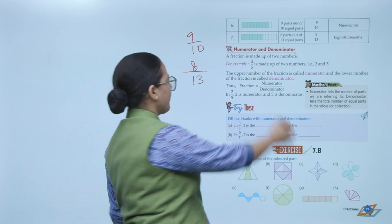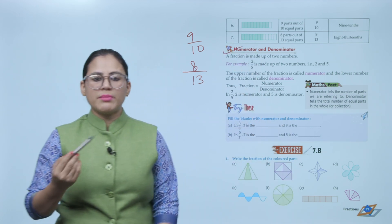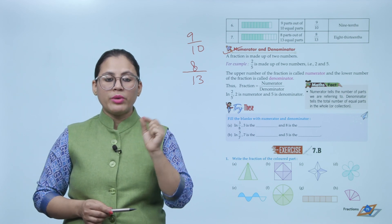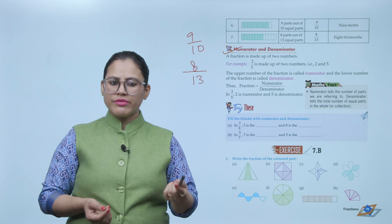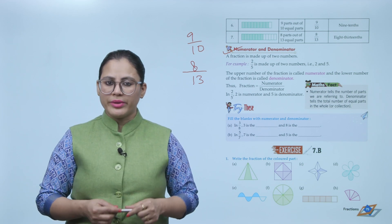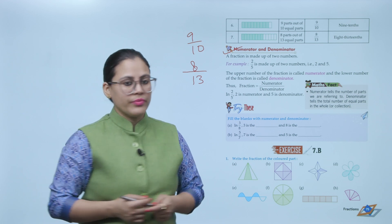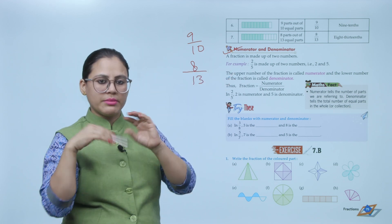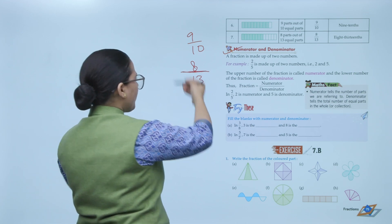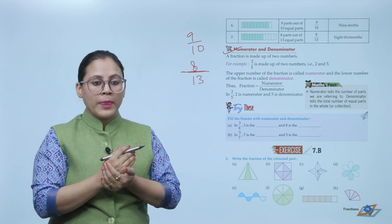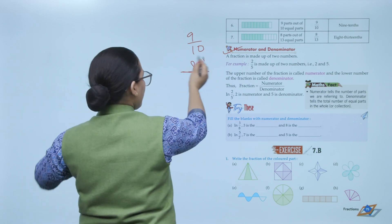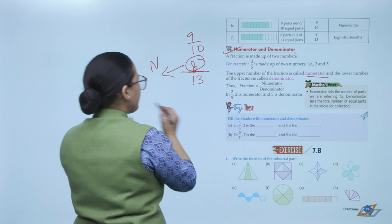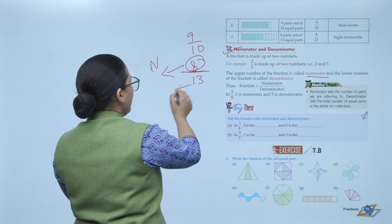Numerator and Denominator: A fraction is made up of two numbers. For example, 2 by 5 is made up of two numbers: 2 and 5. The upper number of the fraction is called the numerator, and the lower number of the fraction is called the denominator.